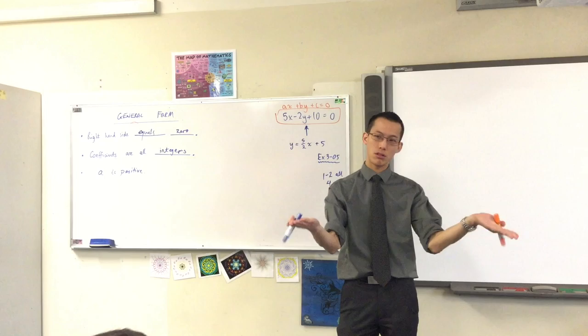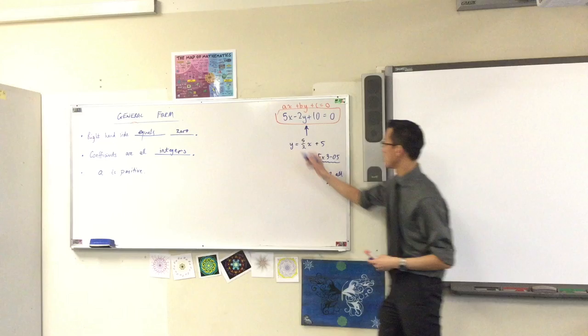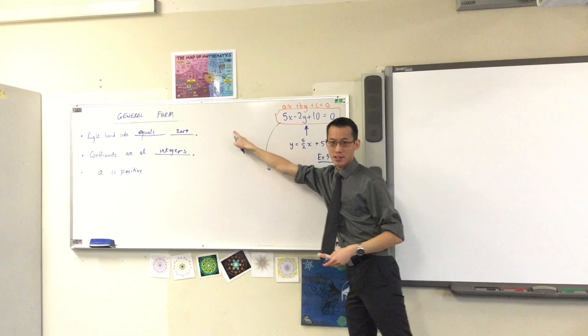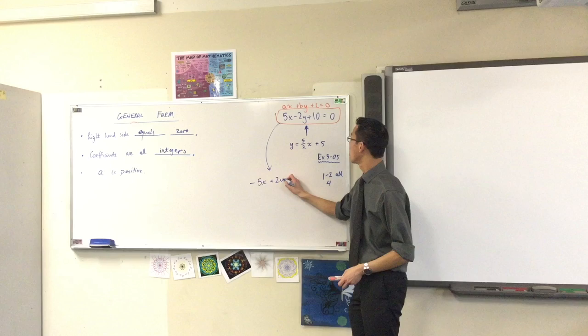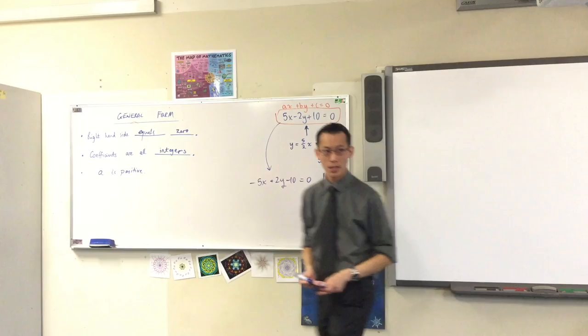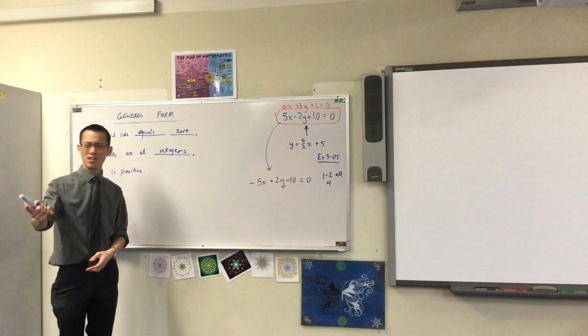As opposed to, for instance, you don't need to write this. I could rewrite this equation, meeting the first two conditions but not the third. I'm going to multiply everything by negative 1. Watch what happens. Negative 5x, plus 2y, what comes next? Minus 10, equals 0. The right-hand side is still 0, everything is in integers, that's okay, but your general form and my general form might look different. That's a bit weird.